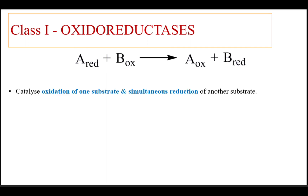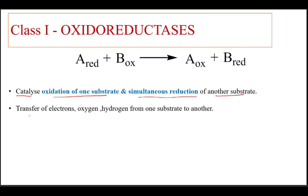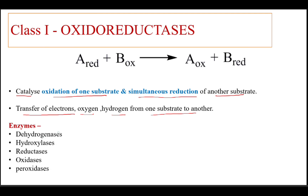Class 1: oxidoreductases. This particular group of enzymes catalyze the oxidation of one substrate with simultaneous reduction of another substrate. They are mainly involved in the transfer of electrons, oxygen, and hydrogen from one substrate to another. Examples of enzymes under oxidoreductases are dehydrogenases, hydroxylases, reductases, oxidases, and peroxidases.